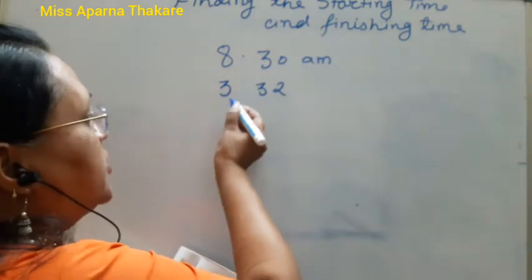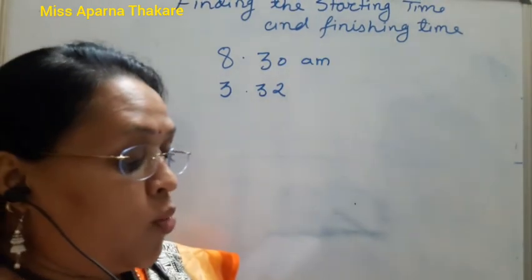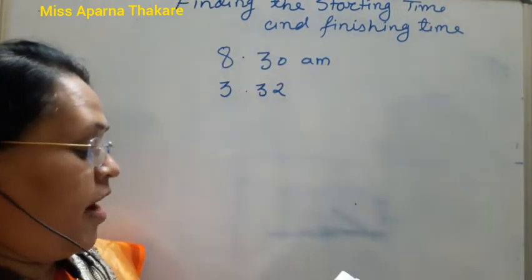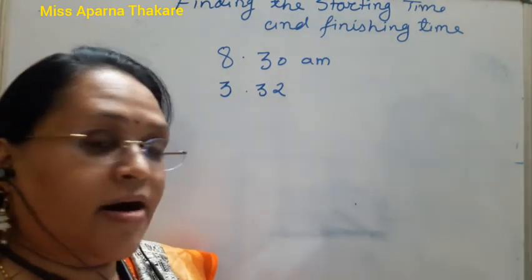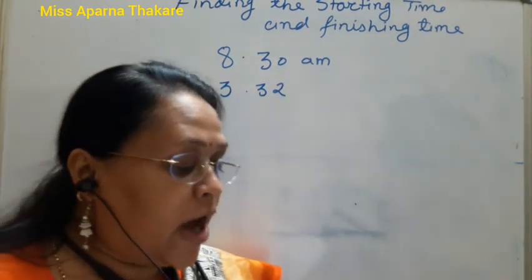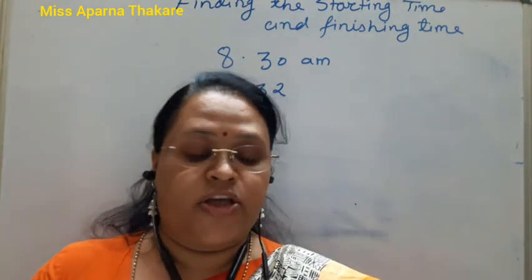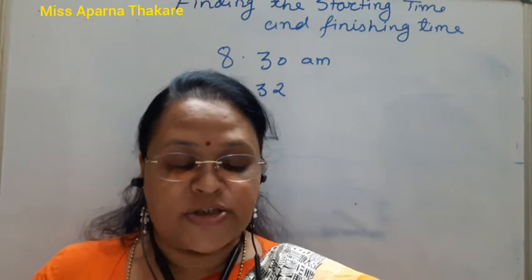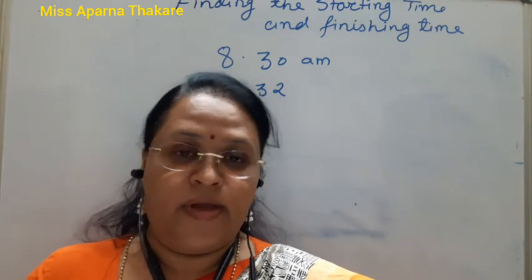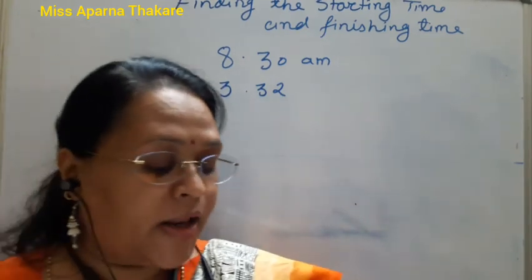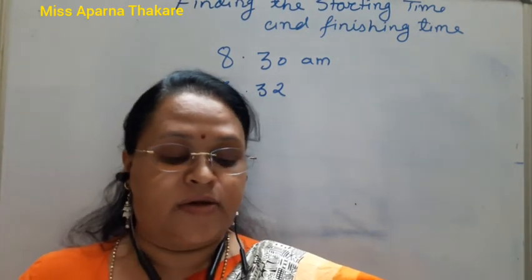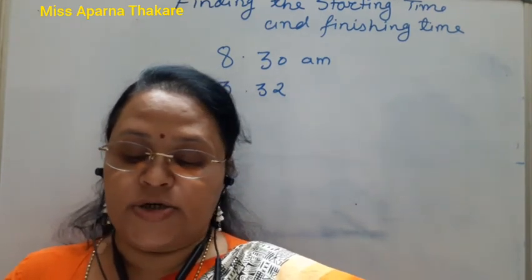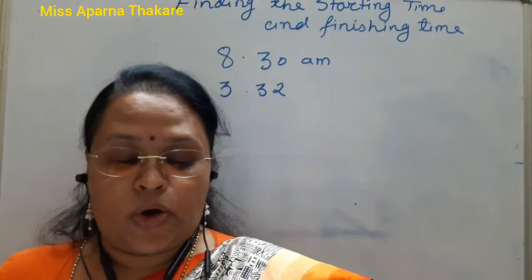We have 8 hours 30 minutes as the starting time and 3 hours 32 minutes as the elapsed time. To find at what time Ajay finished collecting dabbas, we need to add the elapsed time to the starting time. Starting time plus elapsed time equals finishing time. The time spent during an event or activity is called the duration or elapsed time.